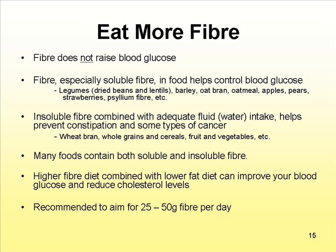You want to eat more fiber, and fiber does not raise your blood glucose. Fiber, especially soluble fiber in food, helps control blood glucose. Some examples of soluble fiber include legumes such as dried beans and lentils, barley, oat bran, oatmeal, apples, pears, and strawberries. There's also research linking fiber to reduced risk of some types of cancer. Some examples of insoluble fiber include wheat bran, whole grains and cereals, and fruit and vegetables — and many foods contain both soluble and insoluble fiber.